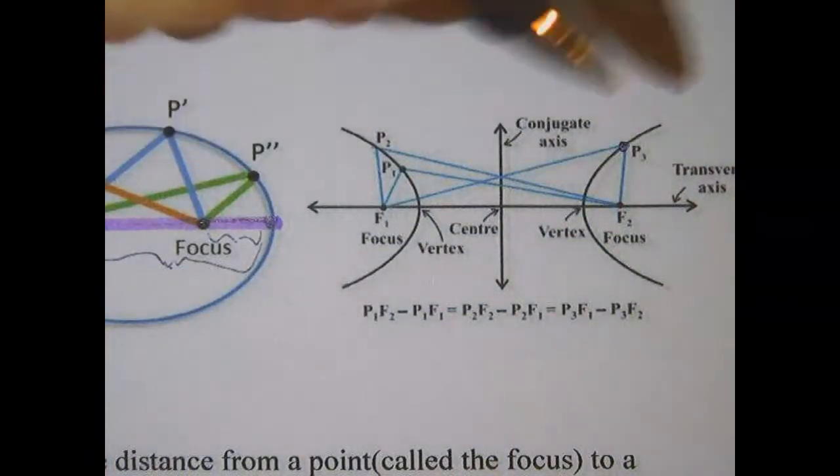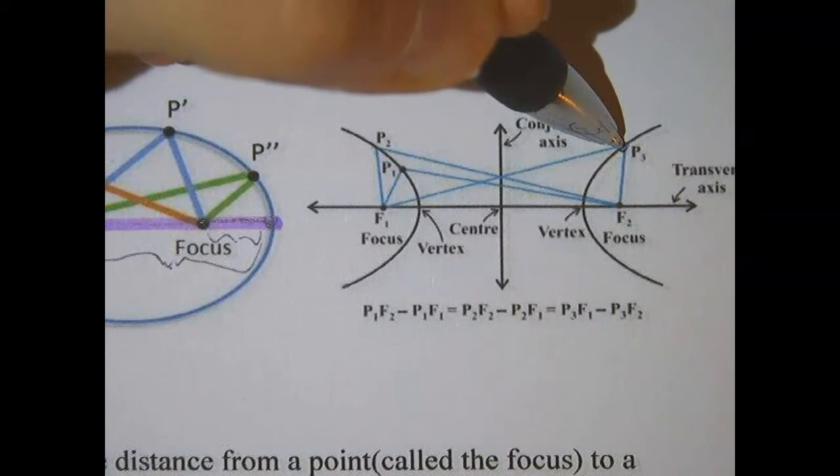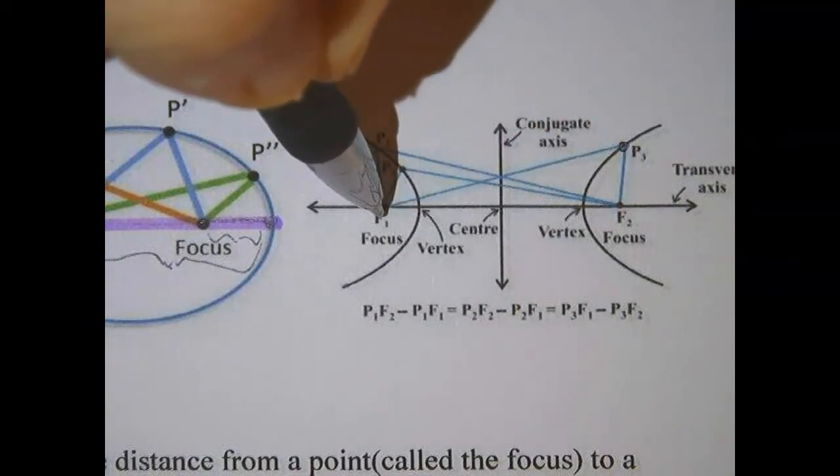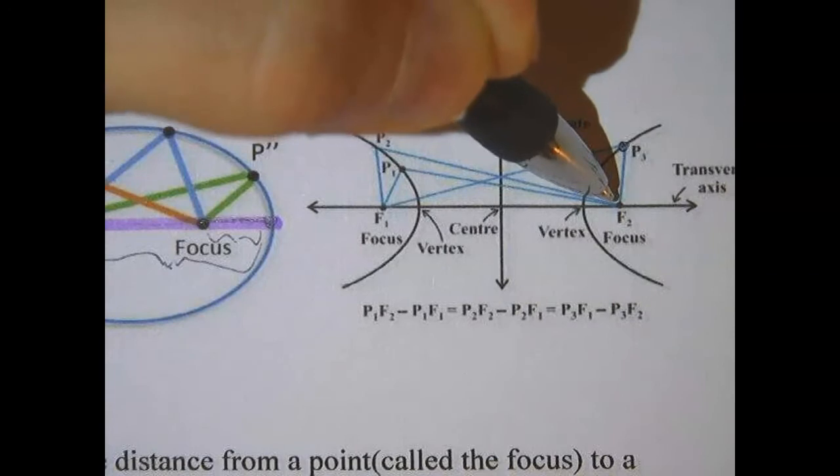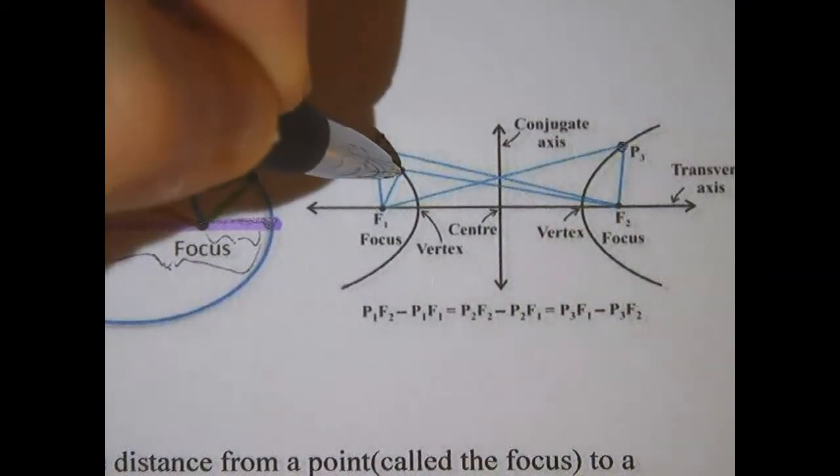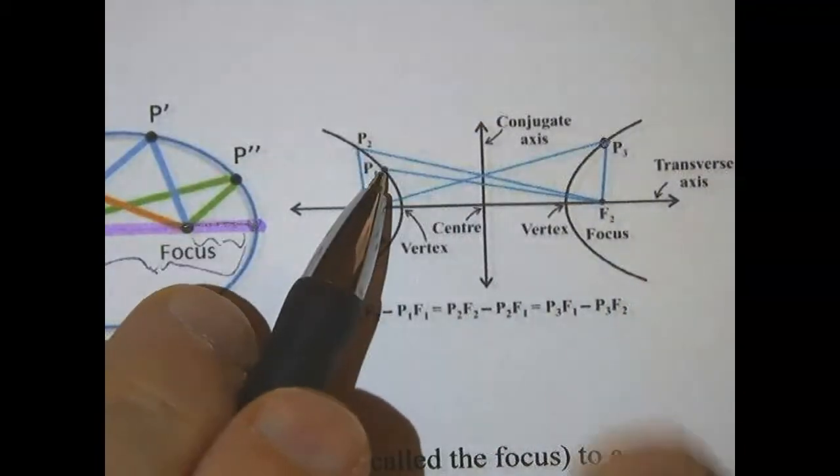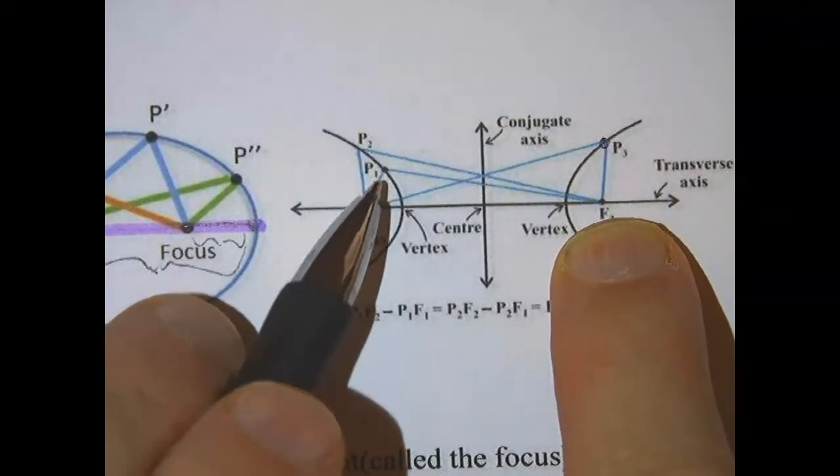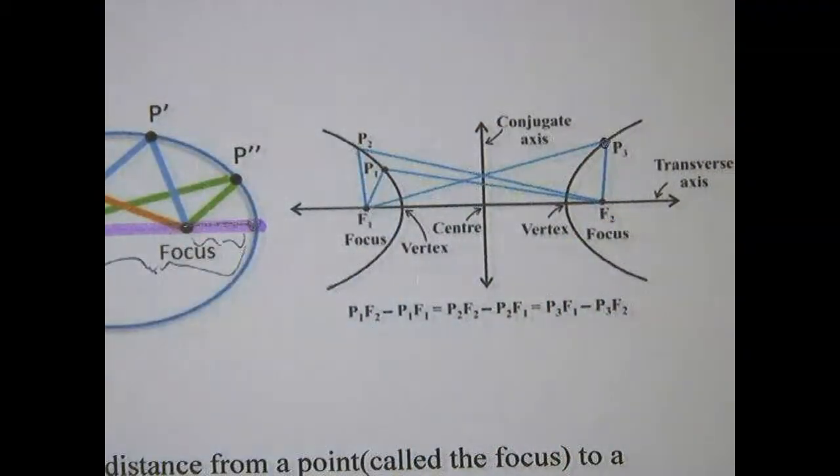So if I take a point on the hyperbola, like this point right here, then the distance from this point to the farther focus, minus this point to the nearer focus, will be equal to the difference, let's say if I took this point, and if I took the distance from there to the farther focus, minus the closer focus,